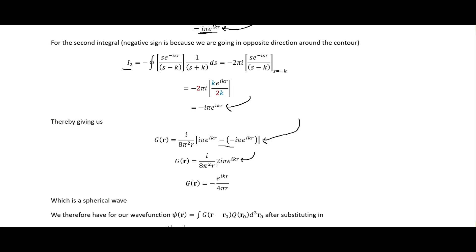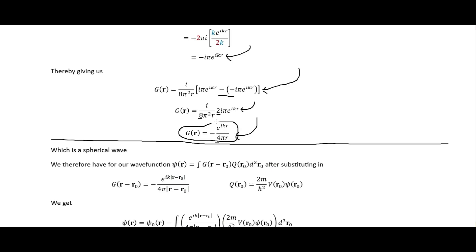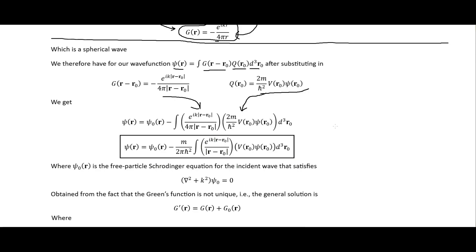This gives us our Green's function, which takes the form of a spherical wave: G(R) = −e^(iKR) / (4πR). This concludes the derivation of the Green's function. We now have our wave function expressed as the integral of the Green's function times Q integrated over three dimensions, and with some algebraic manipulation we arrive at the integral form.